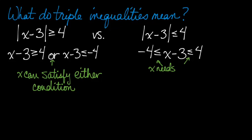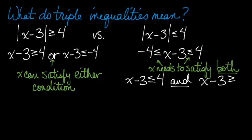But on the right, what we're saying is that x needs to satisfy both of these conditions. This is really just a shortcut. What I'm really saying is that x minus 3 has to be less than or equal to 4, and x minus 3 has to be greater than or equal to negative 4 at the same time. Both conditions need to be satisfied.